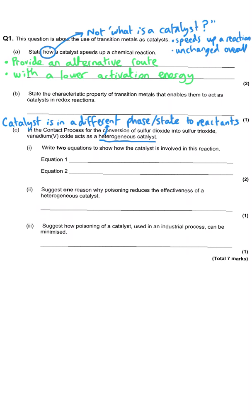Then they ask how transition metals are particularly able to act as catalysts, specifically in redox reactions. That property is that they have variable oxidation states — the ability to change from one oxidation state to another and then back again — which is how they actually function.